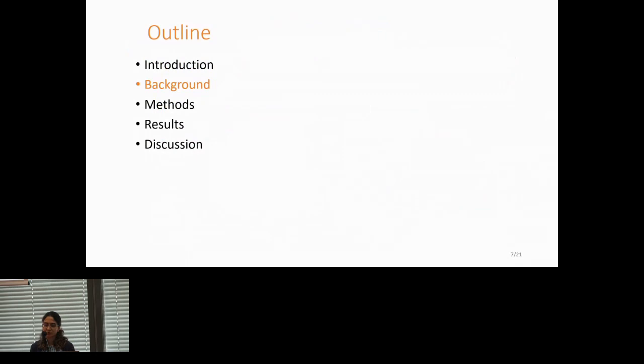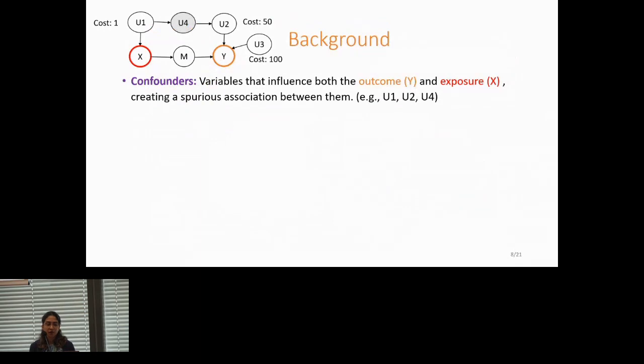Now, I will cover some necessary background required to know before proceeding to the method section. A confounder is a variable that influences both the outcome and the exposure. It creates spurious association between both of them. Examples of confounders are, for example, U1 and U2, which are observable, and U4, which is unmeasurable. If confounders are not appropriately addressed, the estimated causal effect may be distorted or misleading. And note that I have put the cost of measuring each of these nodes next to the node, and I'm going to use that in the definition of a backdoor adjustment set, which is a set of variables that, when we condition upon, can remove the effect of confounders.